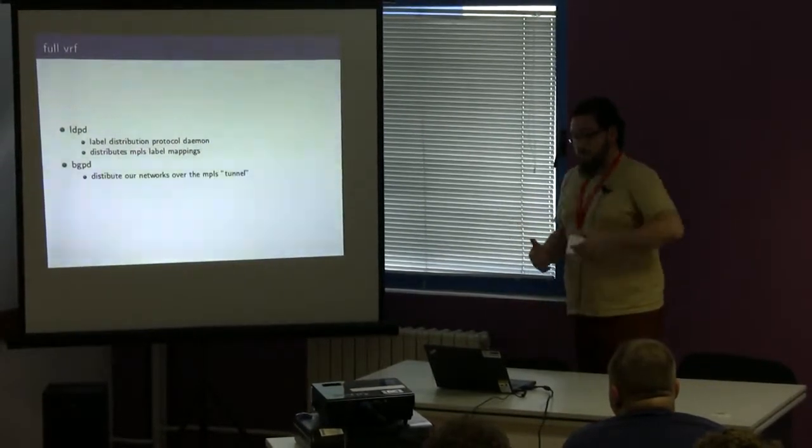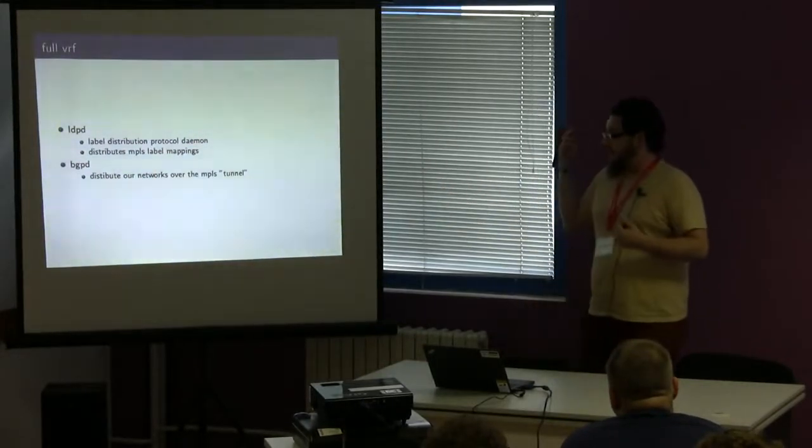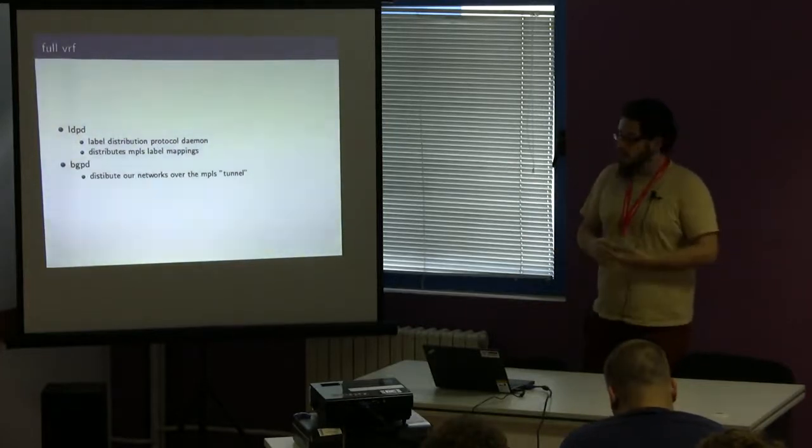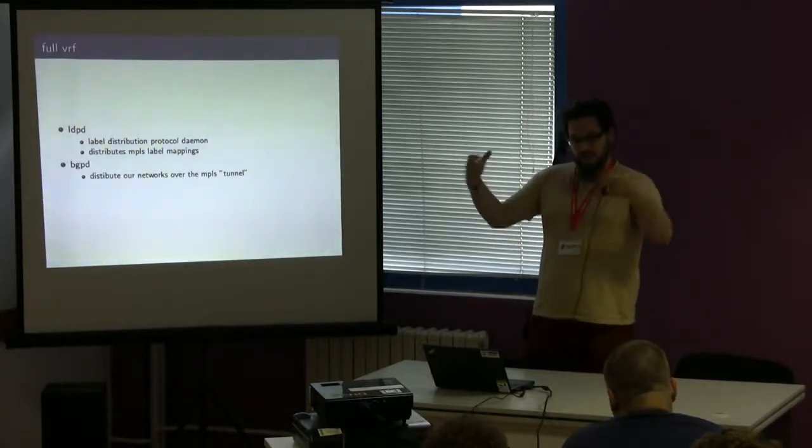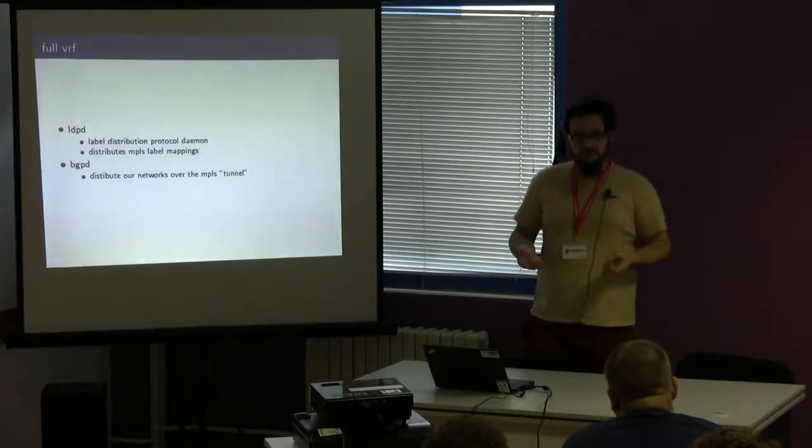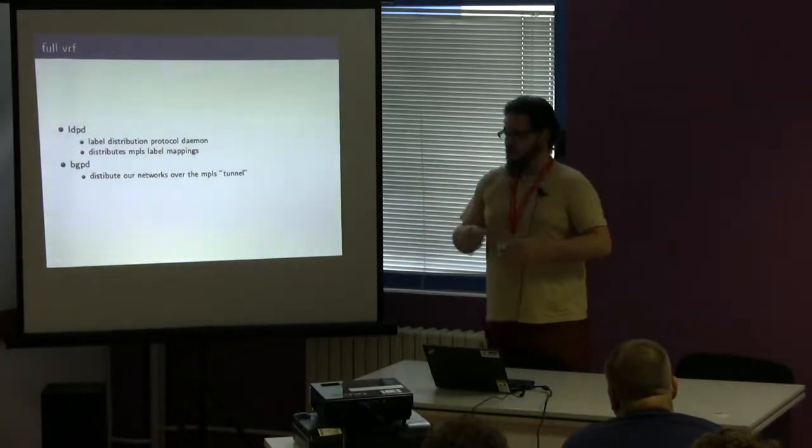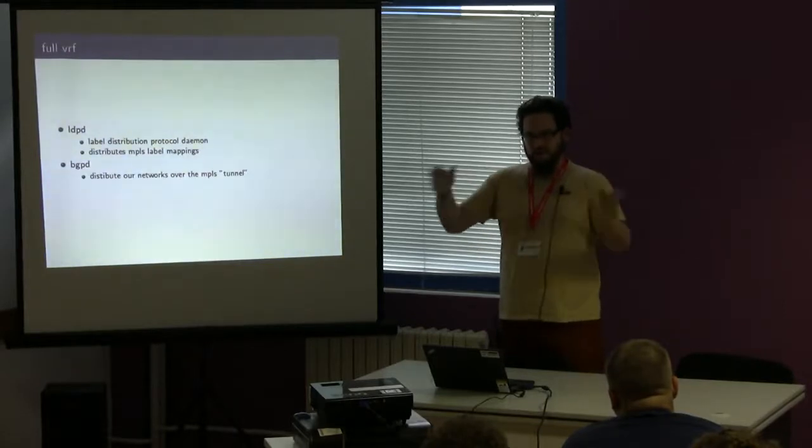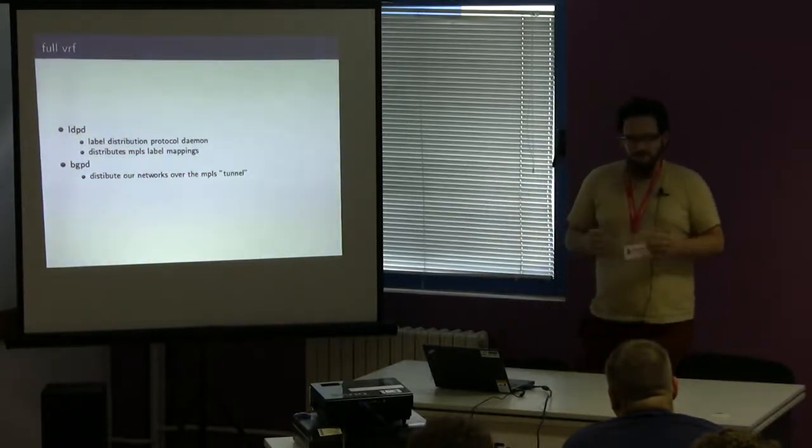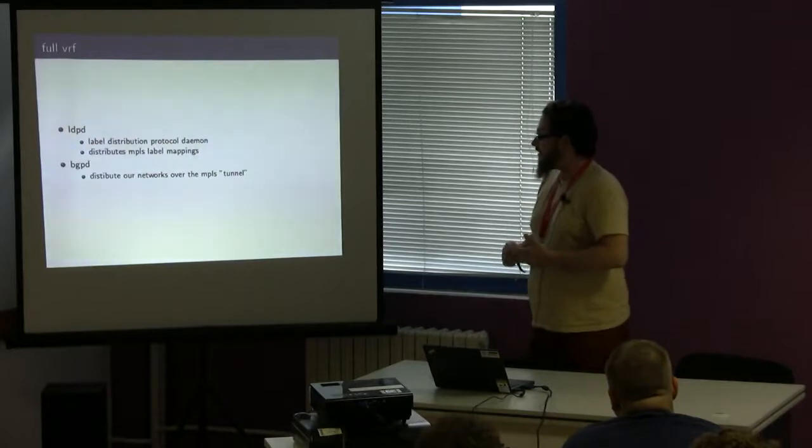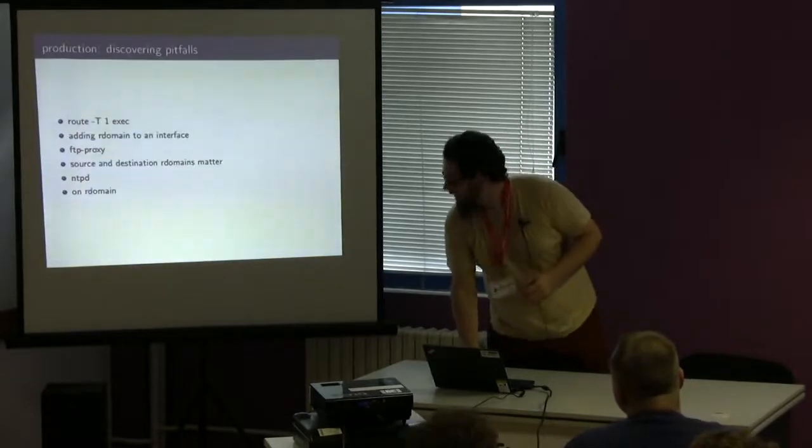Then you get to the full VRF or MPLS, requires two different things. It requires a label distribution protocol and BGP to actually distribute the networks. You would use LDPD to distribute, to label each of the endpoints so it knows which network it belongs to and then distribute this across the network. And then on top of that, you would have BGP that would distribute the networks aiming at each of the endpoint tunnels. That will be basically all of the full VRF for now. Because as I mentioned, I spent most of my time in VRF-Lite and I simply don't remember all those details right now.